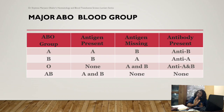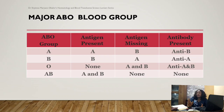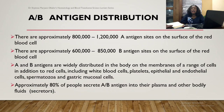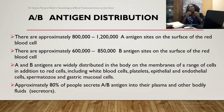Summarizing in tabular form: blood group A has A antigen and anti-B antibody; blood group B has B antigen and anti-A antibody; blood group AB has both A and B antigens and no antibodies; blood group O has no antigens but both anti-A and anti-B. Studies have shown that there are approximately 800,000 to 1.2 million A antigen sites on the surface of red blood cells, and about 600,000 to 850,000 B antigen sites.